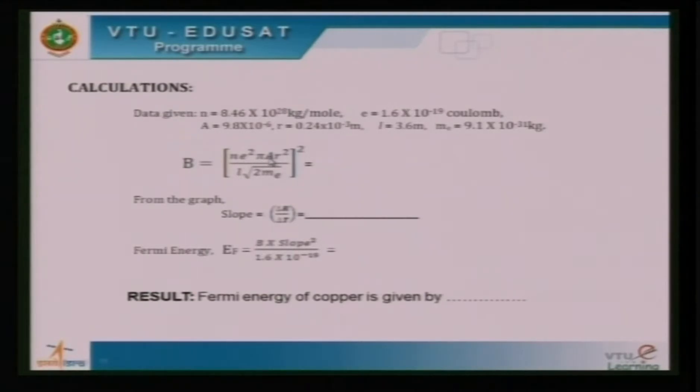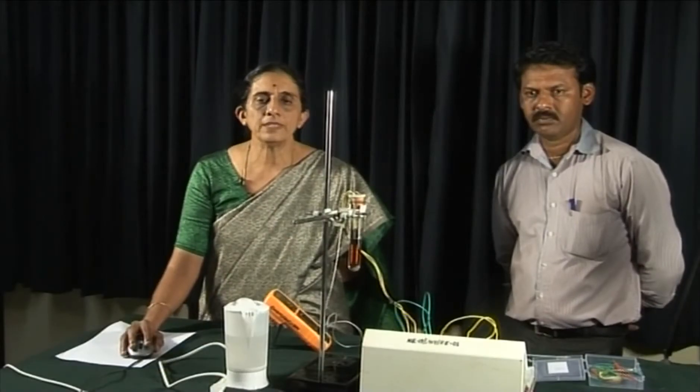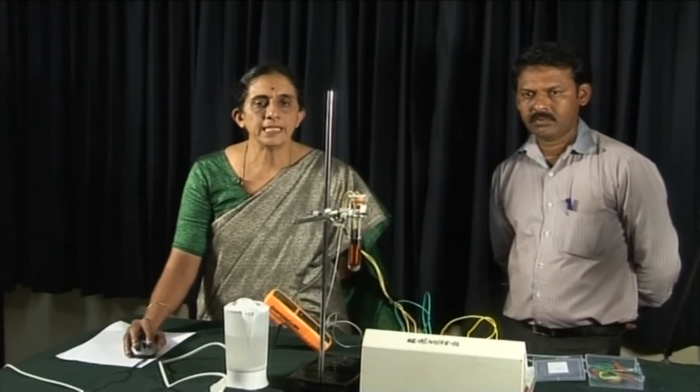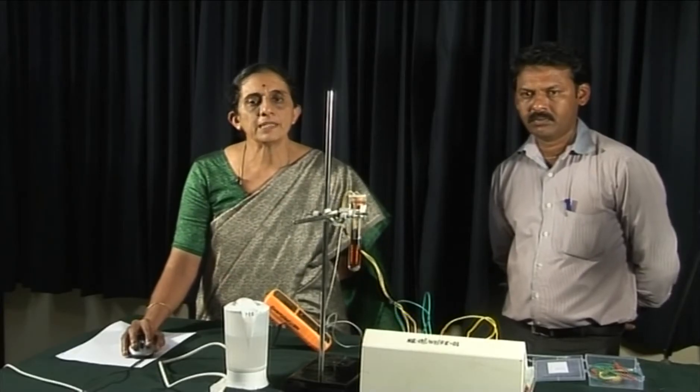A is lambda into T. Lambda is nothing but mean free path of copper that is available in the catalogue and we determine that value. And R is the radius of the copper wire, L is the length of the copper wire, ME is mass of the electron.